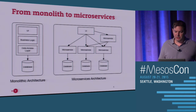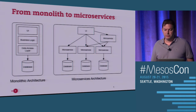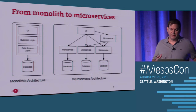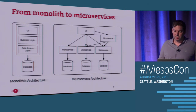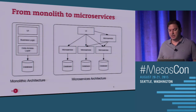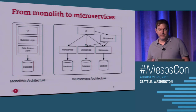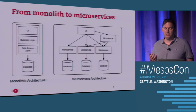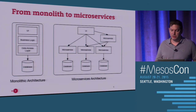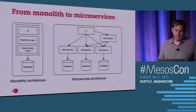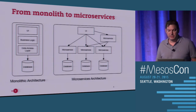We started serving our site with a monolithic architecture — a big, fat application that gets deployed. We turned this monolithic site into several microservices. There were a lot of difficulties growing at the scale we're trying. And about a year ago, we started playing with Mesos.